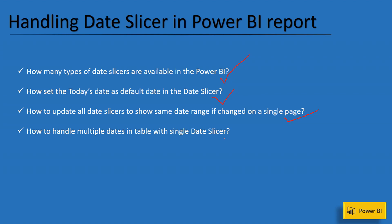Last but not least — and most important — is how to handle multiple dates in a table with a single date slicer. Assume you have a table with multiple date columns, but on a single page you want to display all measures using only a single date slicer to filter all of them. You might think of using the UseRelationship DAX, but in this video we'll discuss one additional approach where you may not have to write DAX at all.